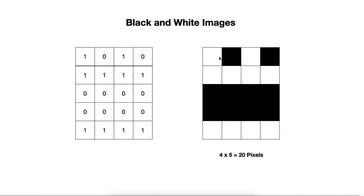The number of pixels in the columns and in the rows represents the resolution of the image. For example, in this image here, we have four pixels for each column and five pixels for each row, which means we have four times five, representing the resolution of the image, which is 20 pixels. So we have 20 pixels total, which is called the size of the image.